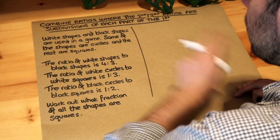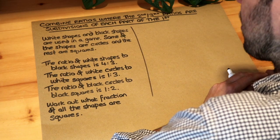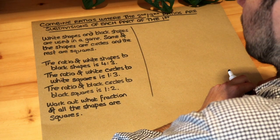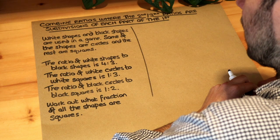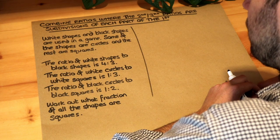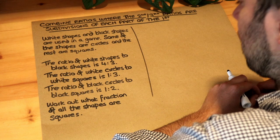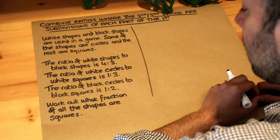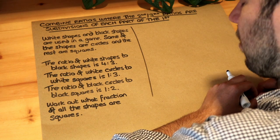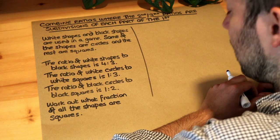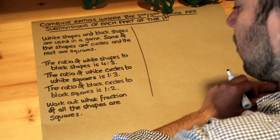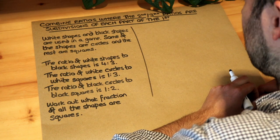Let's read the question. White shapes and black shapes are used in a game. Some of the shapes are circles and the rest are squares. The ratio of white shapes to black shapes is four to three. The ratio of white circles to white squares is one to three. The ratio of black circles to black squares is one to two. Work out what fraction of all the shapes are squares.